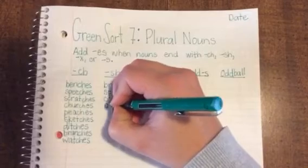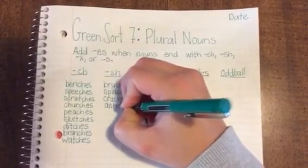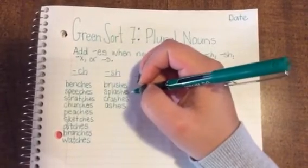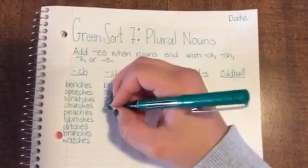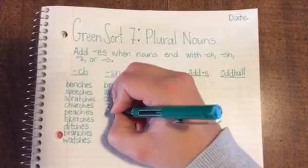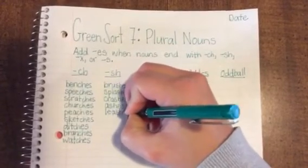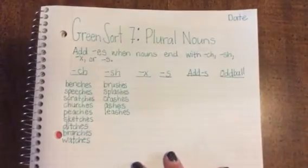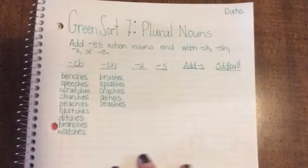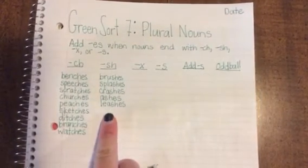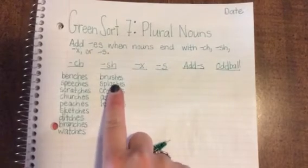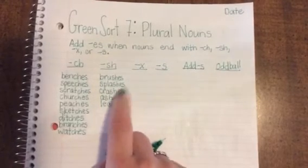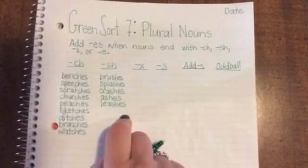Ash becomes ashes. And Zeus is going to love this word: leash becomes leashes. So those are the words that end, when they're a singular noun, they end with SH. So to make it plural, they're going to add the ES.